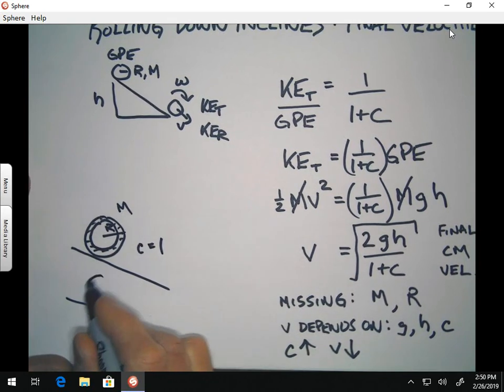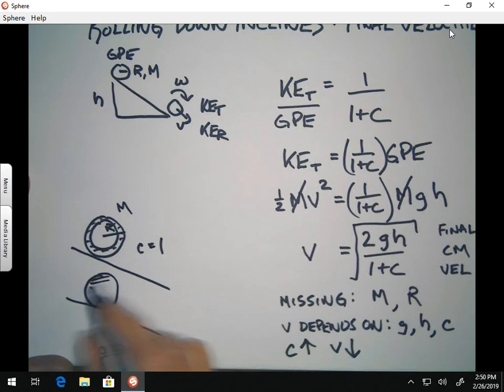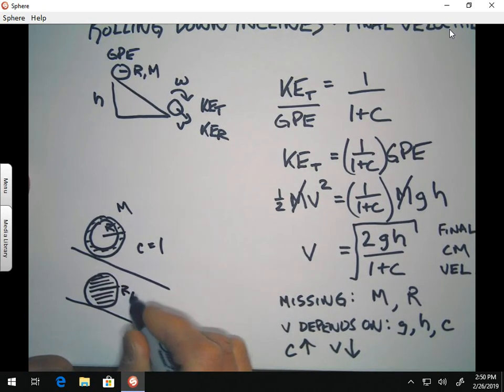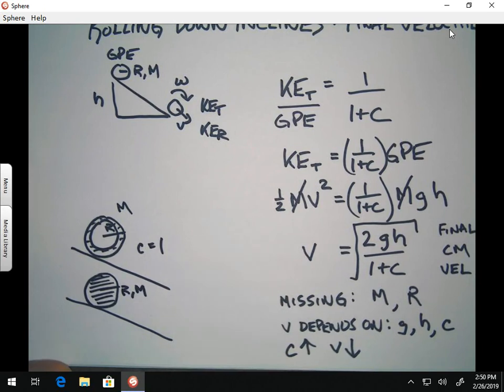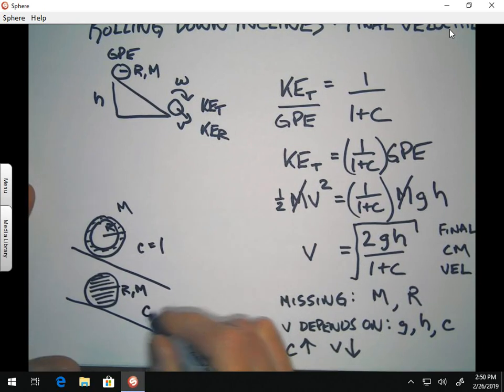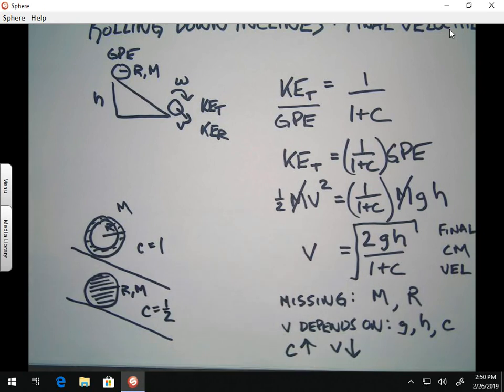If you have a disk, same radius, same mass, the shape factor for the disk is now going to be one-half. And that's assuming it's a uniform disk. And that makes a big difference when you look at the velocities that you get here.